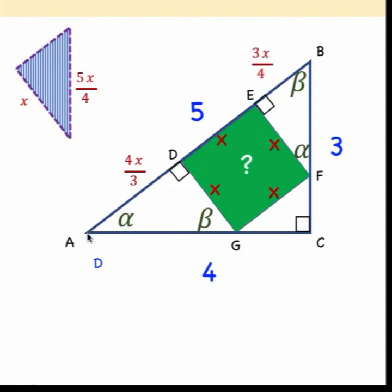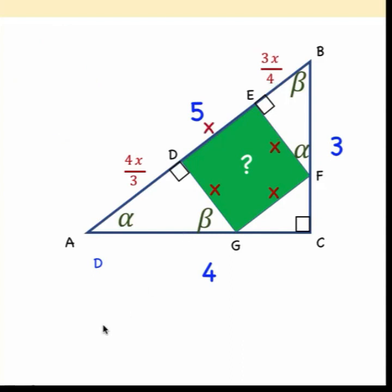And from here, we know that the length of segment AB is 5 units. And that 5 units is the sum of segment AD, segment DE, and segment EB. AD is equal to 4x over 3. DE is equal to x. And EB is equal to 3x over 4. And so we can now form this equation. This length plus this length plus this length, that's the left side of our equation, equals the entire length of side AB, which is 5 units.